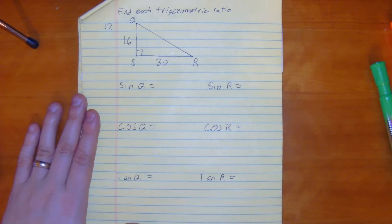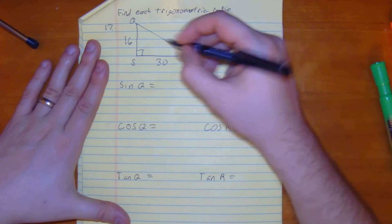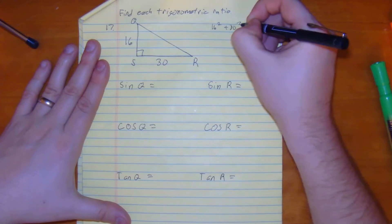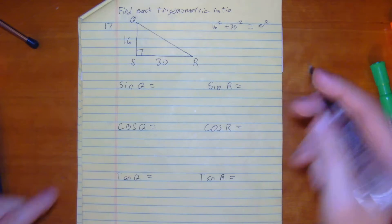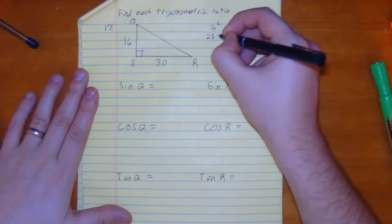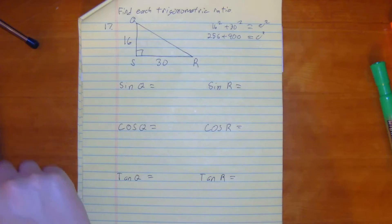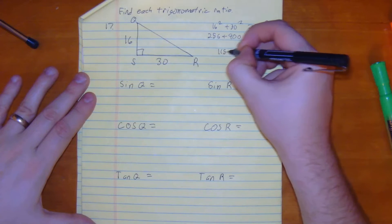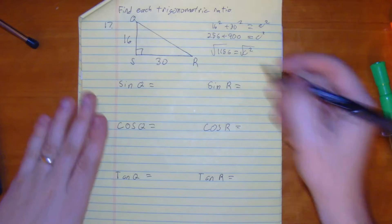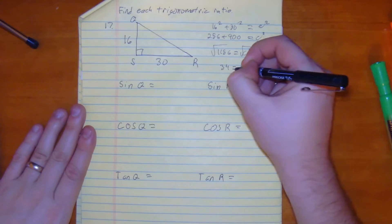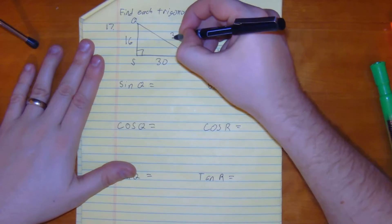So to find our last one, we don't even have to use trig. We can use our Pythagorean theorem. We have two legs, so it would be 16 squared plus 30 squared equals c squared. 16 squared is 256 plus 900 equals c squared. You get 1156 equals c squared, square root, square root. We get 34 is equal to c. So that means qr is 34.